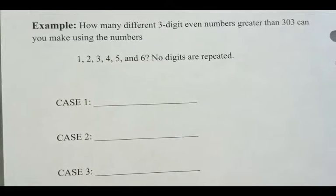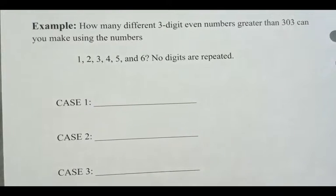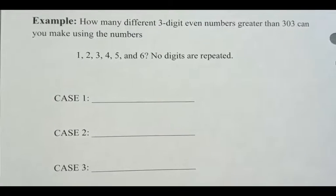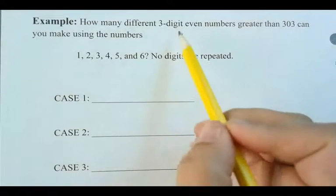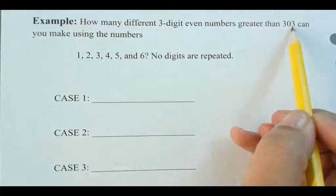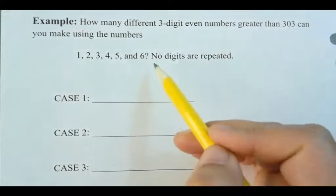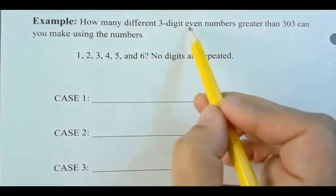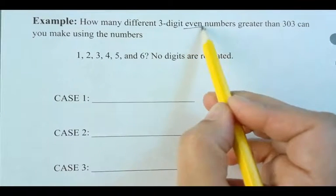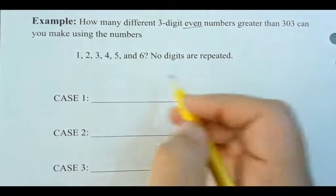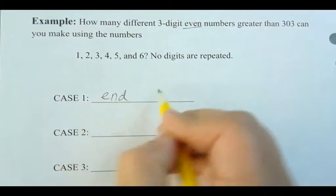Alright. So let's do this other example, and then we'll leave the your turns for you guys to do. Now, let's have a look at how many different three-digit even numbers are greater than 303 that we can make using these numbers. So if I have an even number, what does it have to end in? A 2, 4, 6. So that's what's going to be my cases.